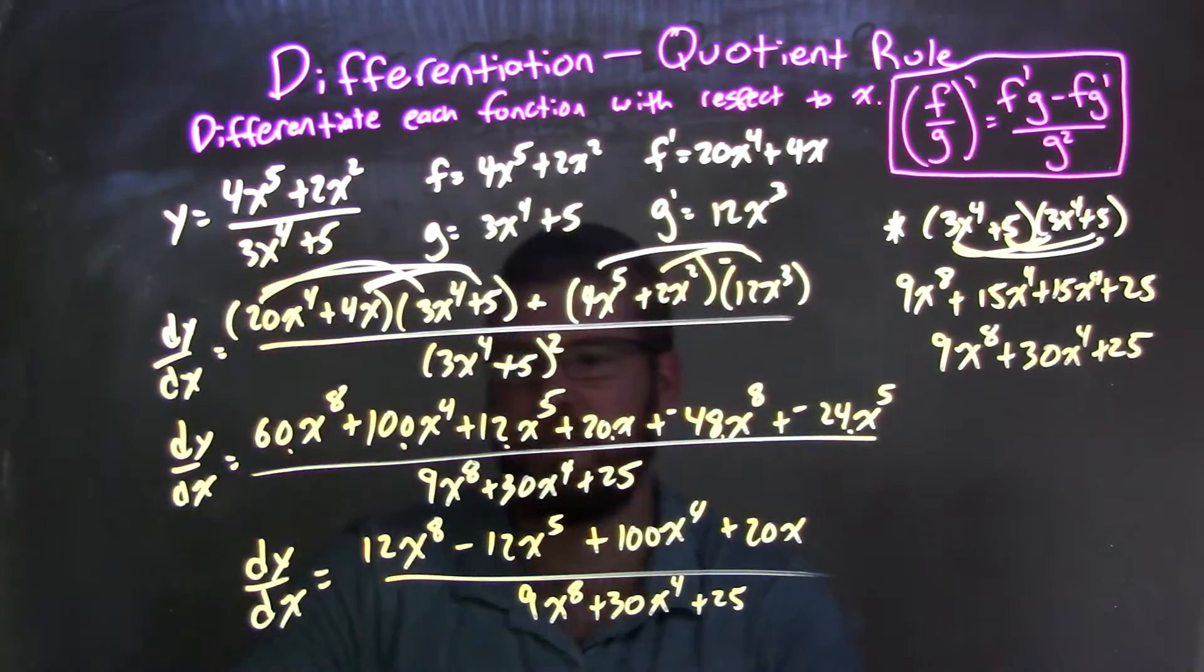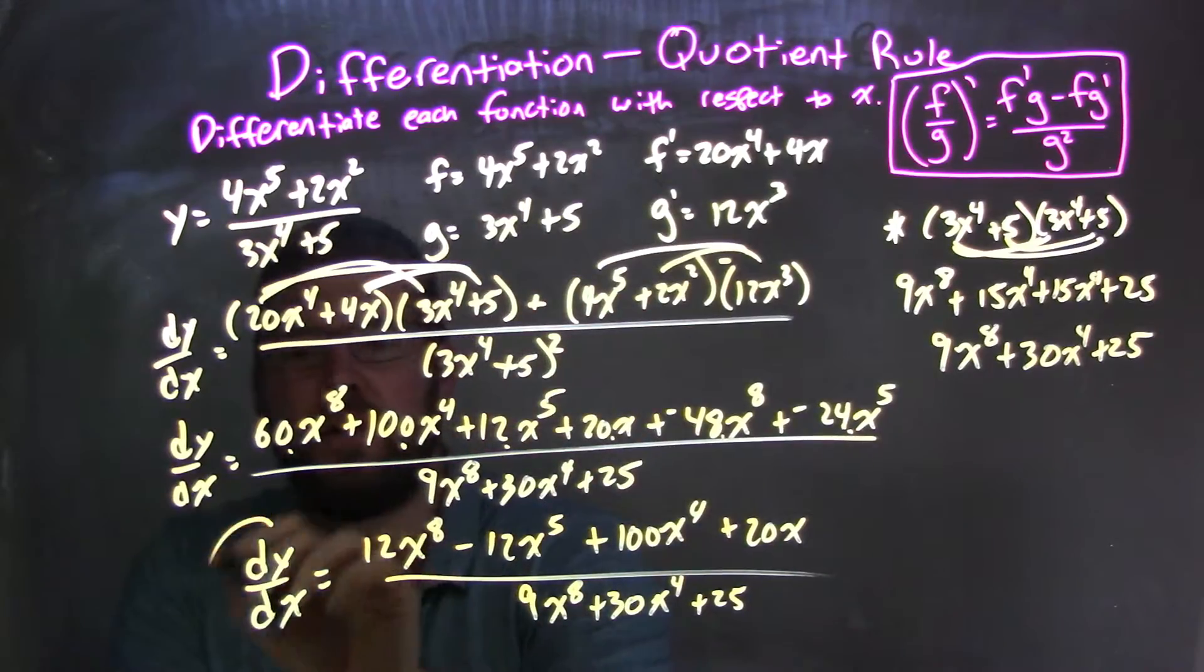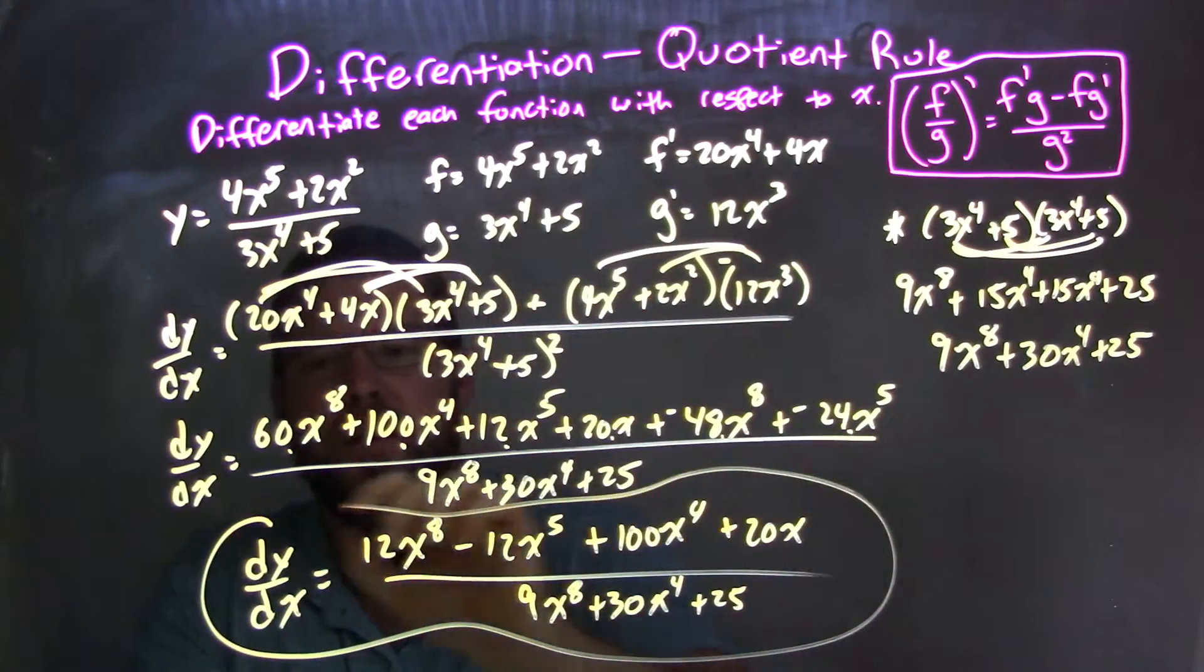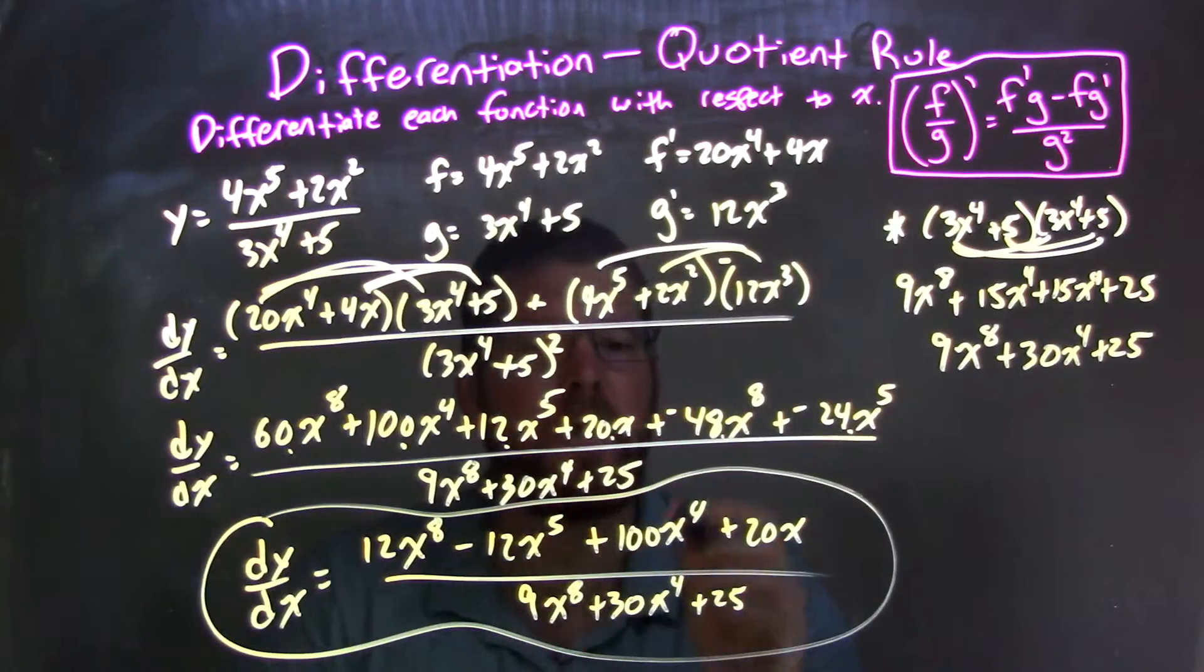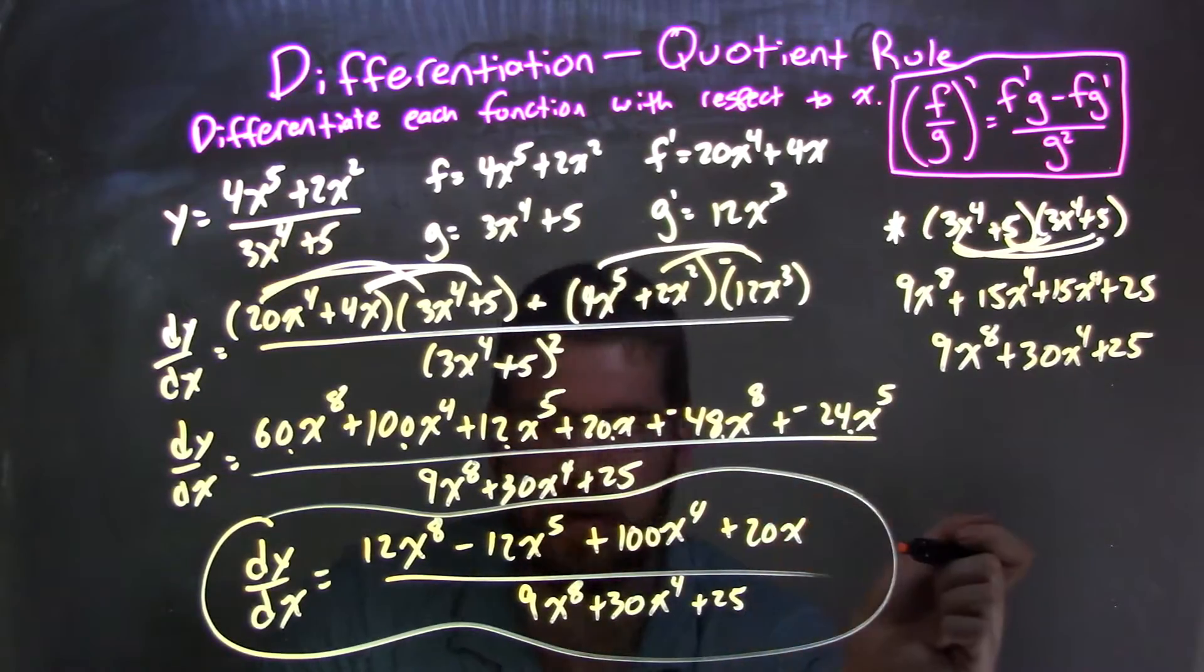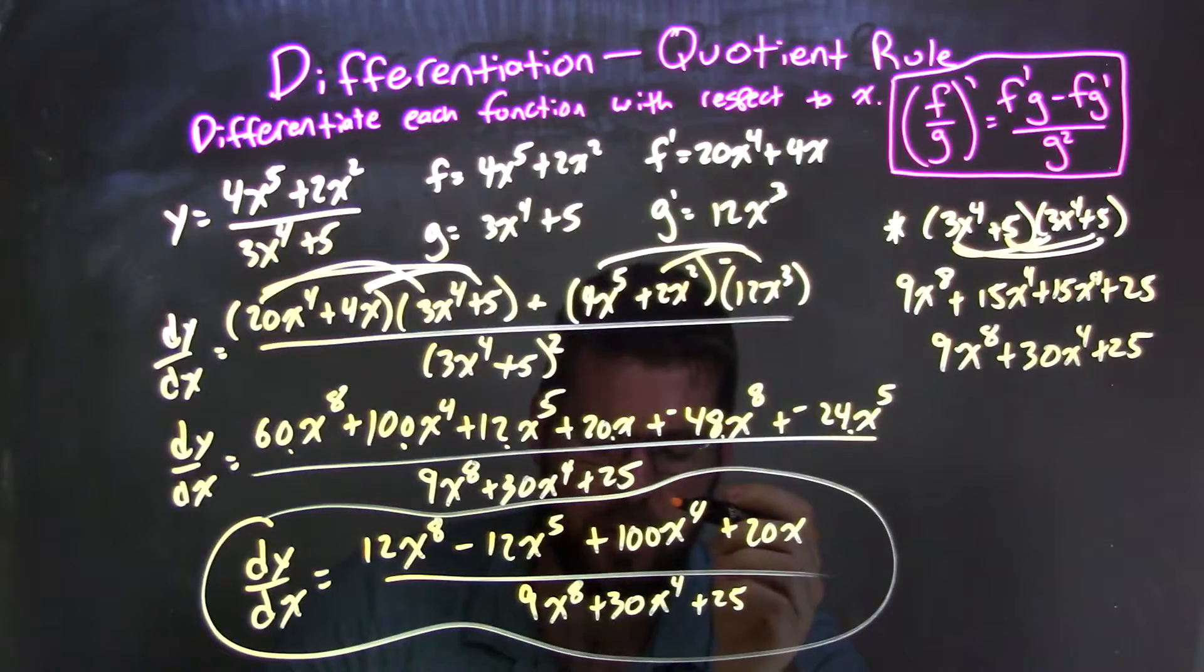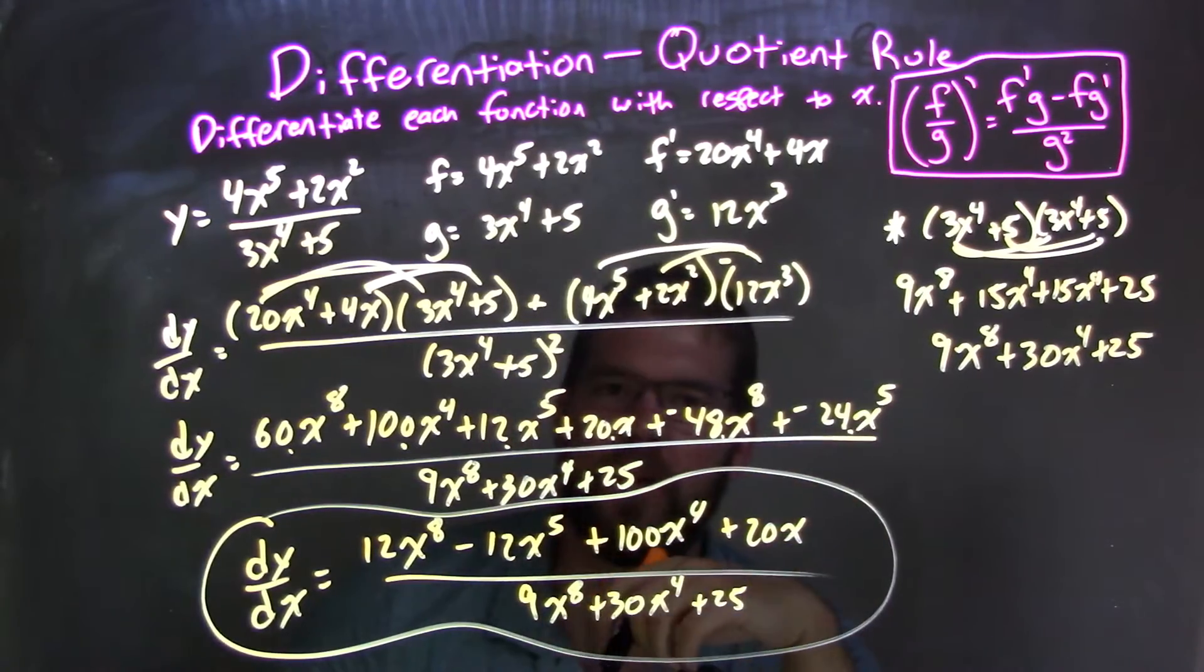I didn't really mark off my students. They didn't find something else to factor out. I was pretty happy with this. So we have our final derivative here of dy dx equal to 12x to the eighth minus 12x to the fifth plus 100x to the fourth plus 20x, all over 9x to the eighth plus 30x to the fourth plus 25.